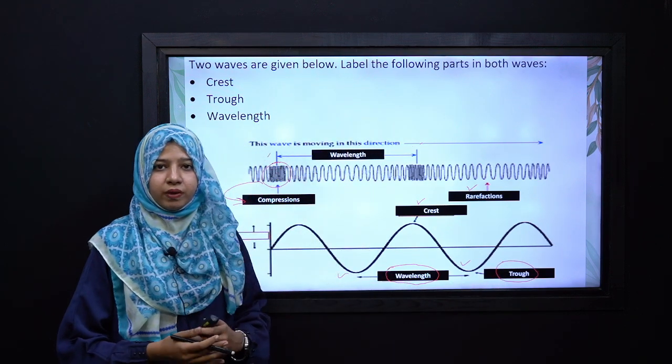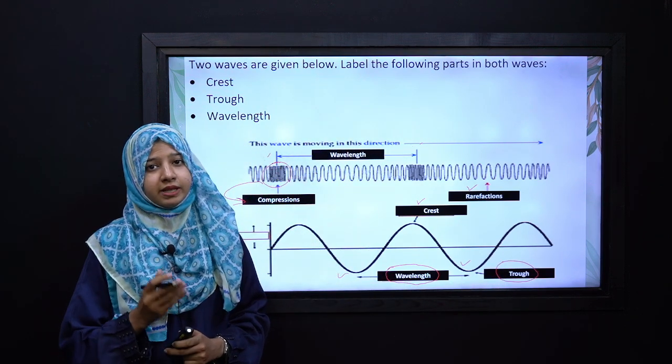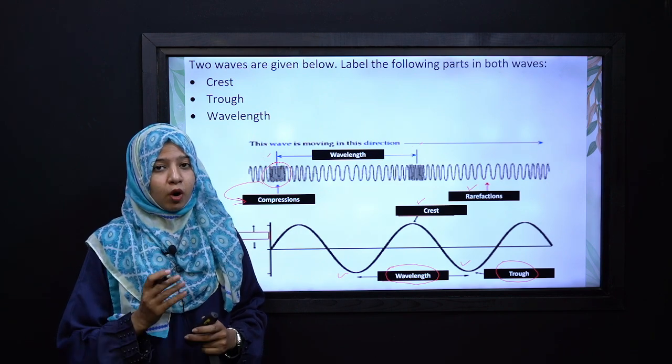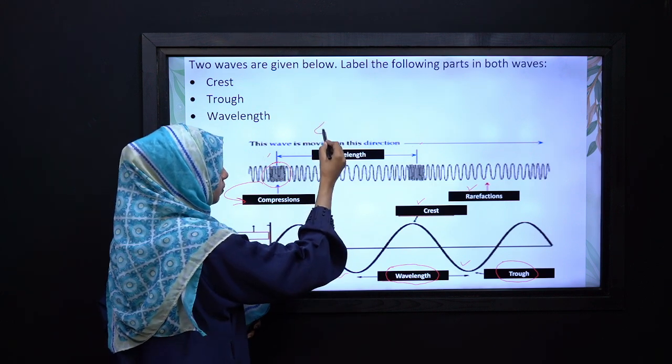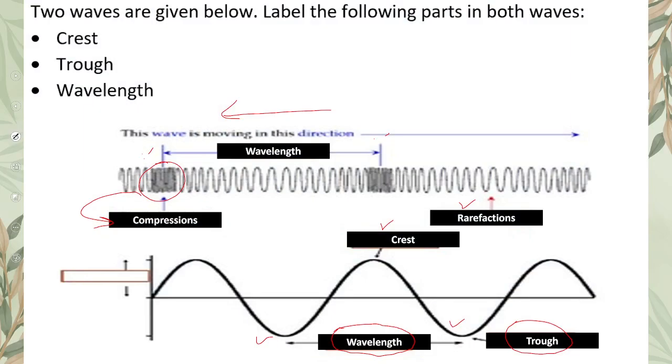In addition, we will label the direction of wave in both waves and the propagation of wave. If we talk about direction, in the slinky spring, the first wave, our direction will be like this. And if we talk about propagation, it will be in this direction.